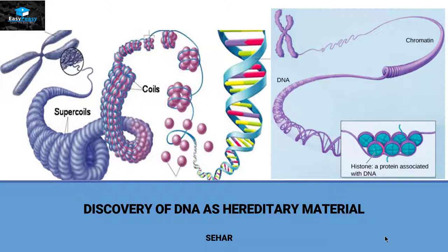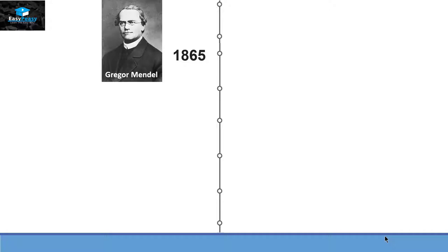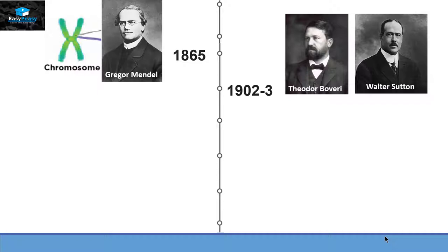If we look at the timeline of genetics, we know that in 1865, Gregor Mendel laid the foundation of genetics. Then in 1902 and 1903, two scientists named Theodore Boveri and Walter Sutton worked independently and found out the chromosomal theory of inheritance.